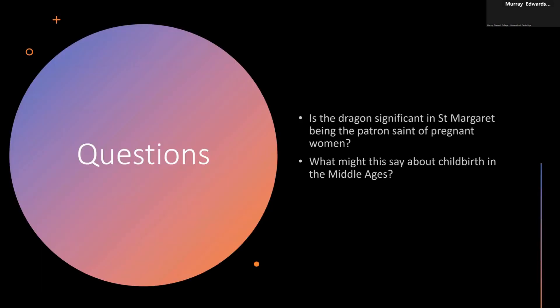Now, if we were all in the room together I would ask you to pause and reflect on this strange artifact and this strange story. Is the dragon significant in Saint Margaret being the patron saint of pregnant women? Perhaps the idea of one body bursting out of another is a rather graphic, maybe disturbing way of representing birth. What might that say about childbirth in the Middle Ages? Well, one thing it might say is that it was incredibly dangerous — you really needed all the protection you possibly could get — so it was probably a good idea to pray to Saint Margaret, because it wouldn't do any harm.